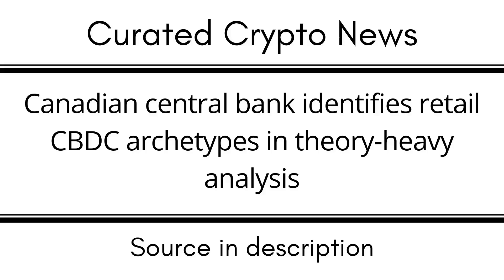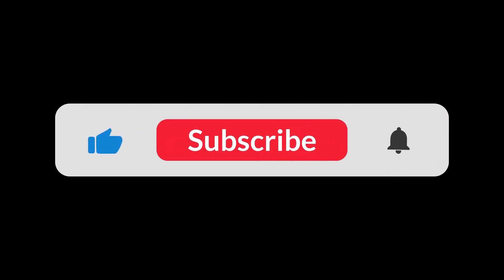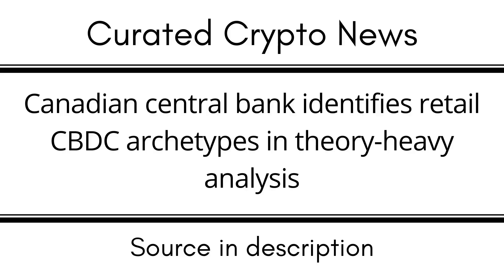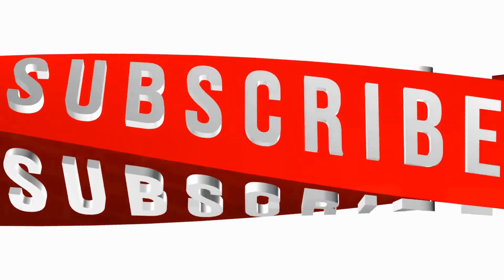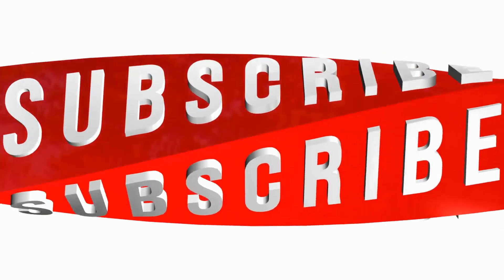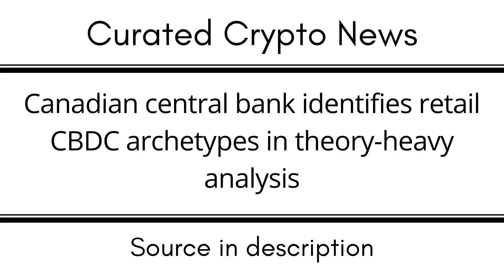An analyst at the Bank of Canada has written a paper that identifies recurring patterns in CBDC models and how those patterns impact a list of performance criteria. Five patterns that recur in retail central bank digital currency, CBDC, designs were identified in a new Bank of Canada staff analytic note. The research focused on information organization and compared software rather than real or proposed CBDCs, and it examined the practical implications of its findings for retail payment systems.